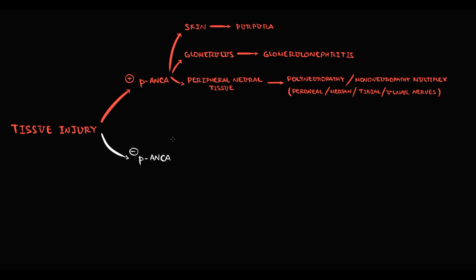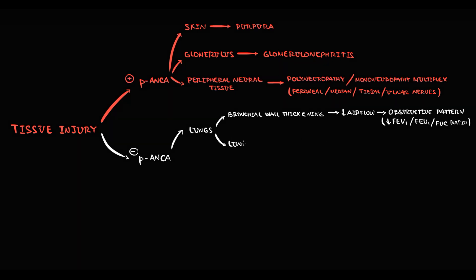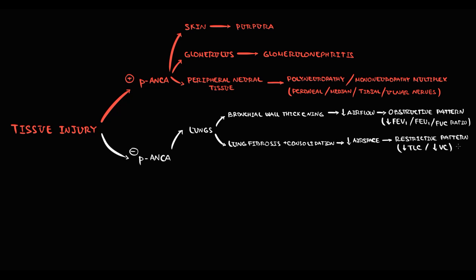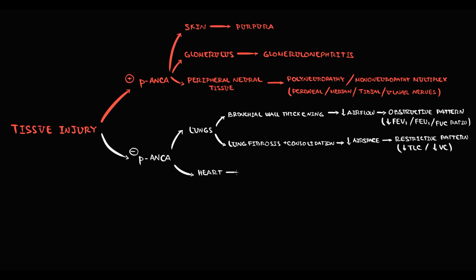If P-ANCA is absent, injury most commonly occurs to the lungs, where inflammation causes bronchial wall thickening and decreasing airflow — detectable as an obstructive pattern on spirometry, determined by decrease in FEV1 and decreased FEV1-to-FVC ratio. After inflammation, lung tissue also regenerates by fibrosis, creating consolidation and a restrictive pattern on spirometry, determined by decrease in total lung capacity and vital capacity. The second site of injury in the P-ANCA-negative pattern is heart tissue, where inflammation causes myocardial injury and can result in cardiomyopathy.